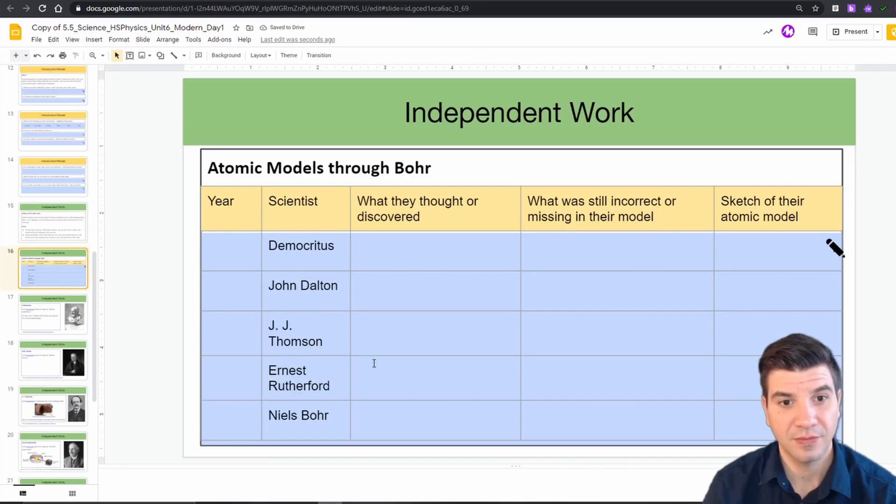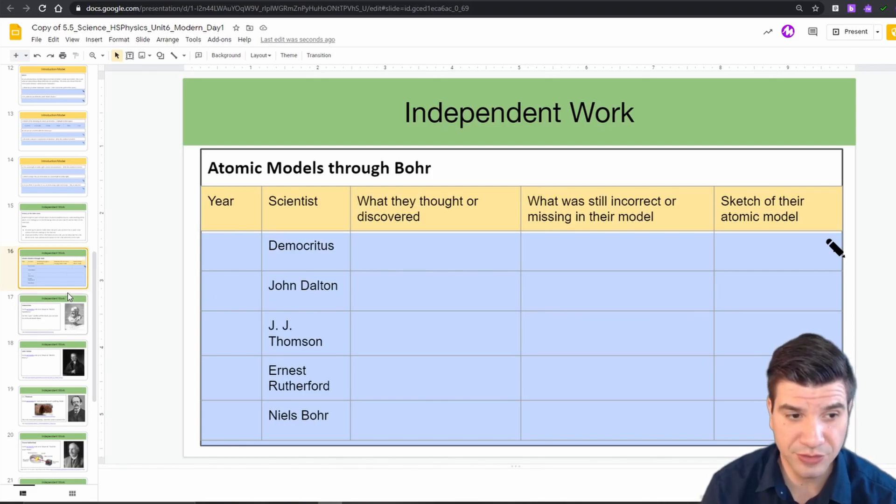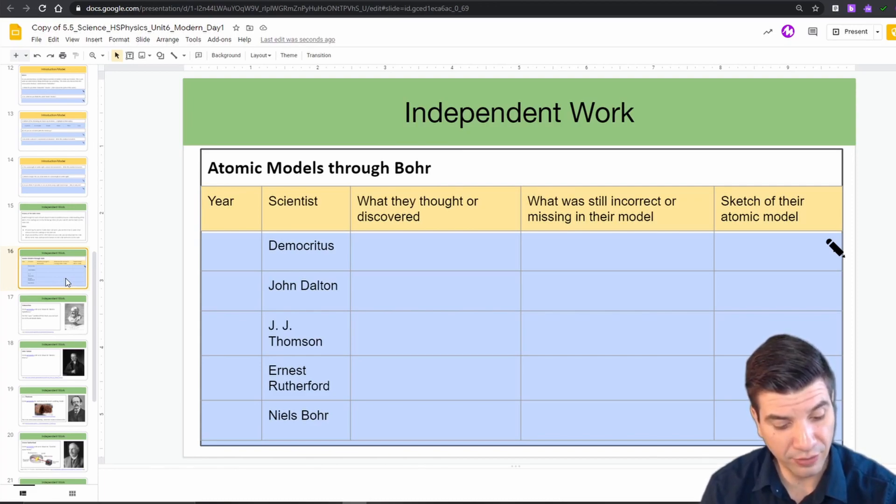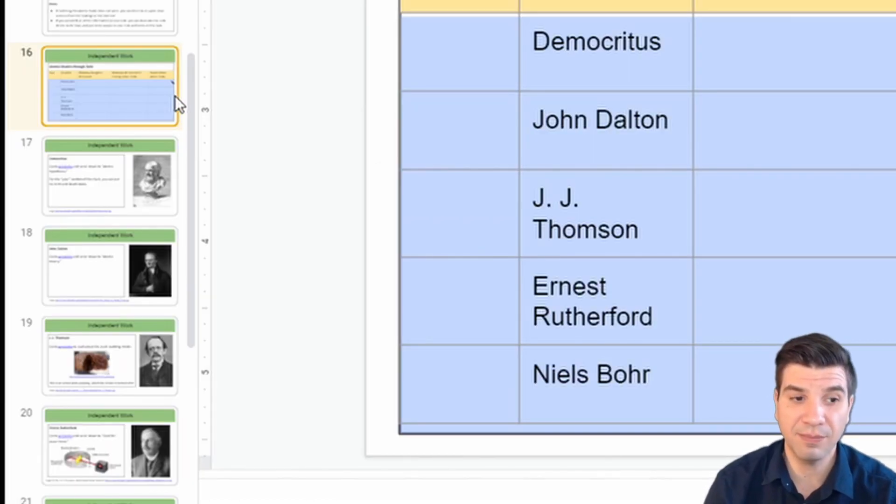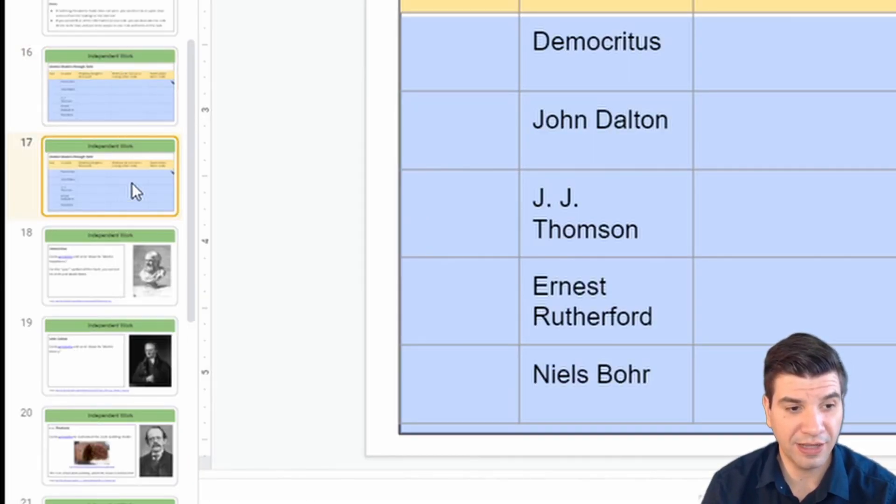Probably the easiest way to go about duplicating the slides is by selecting the slide we're interested in, which is this one here titled Independent Work Atomic Models through Bohr. We'll select it by tapping on it and then holding CTRL down, we're going to tap the C button. This will copy that slide. Now to duplicate it, we're going to hold CTRL again and tap the V button and this will duplicate it.